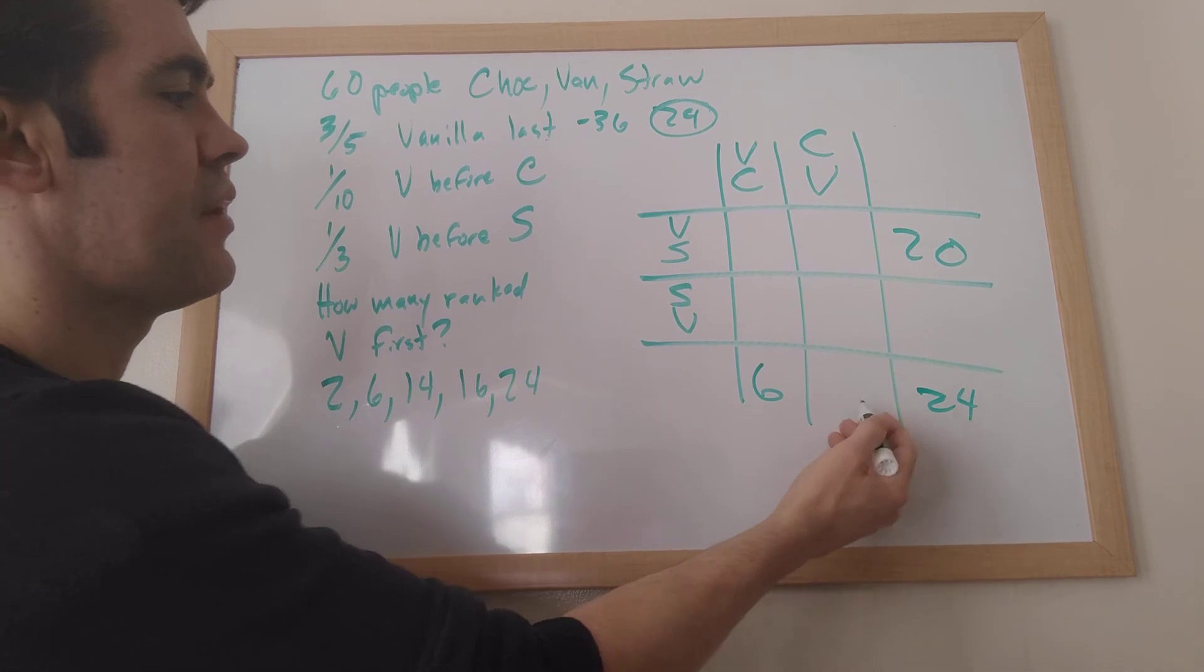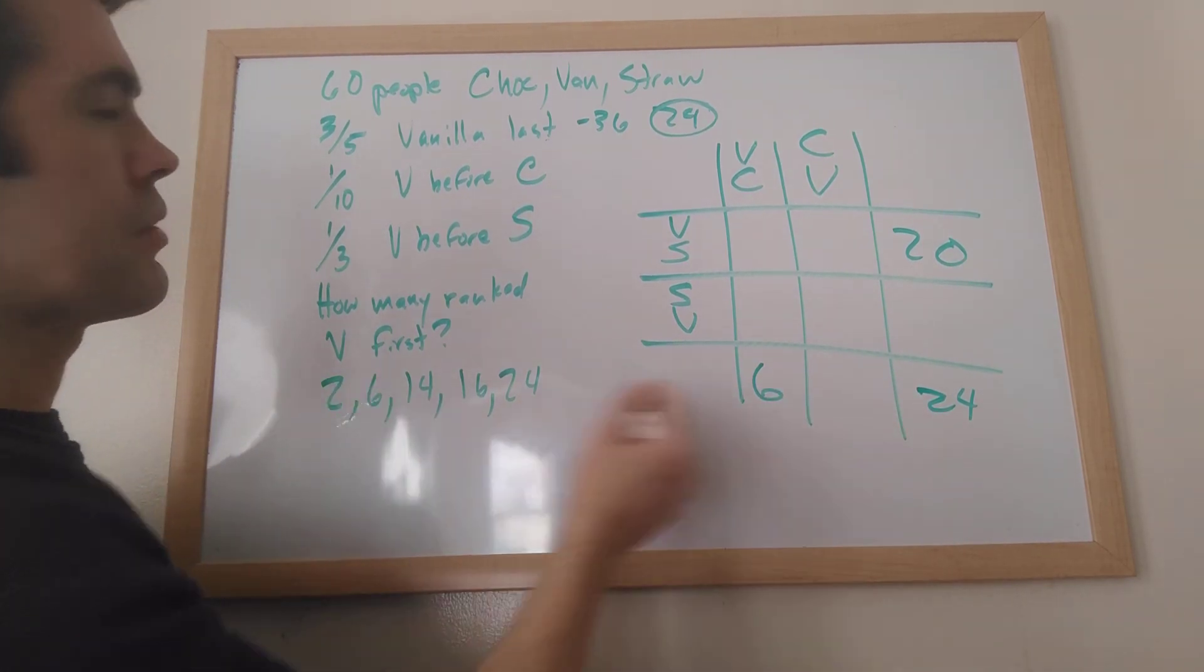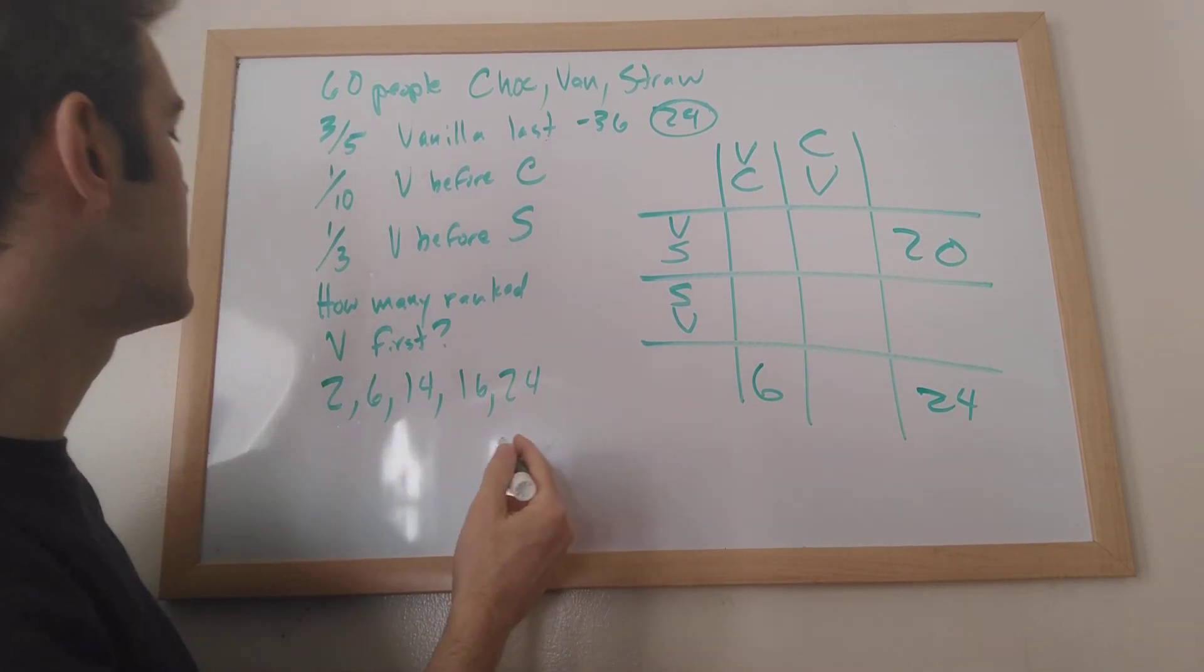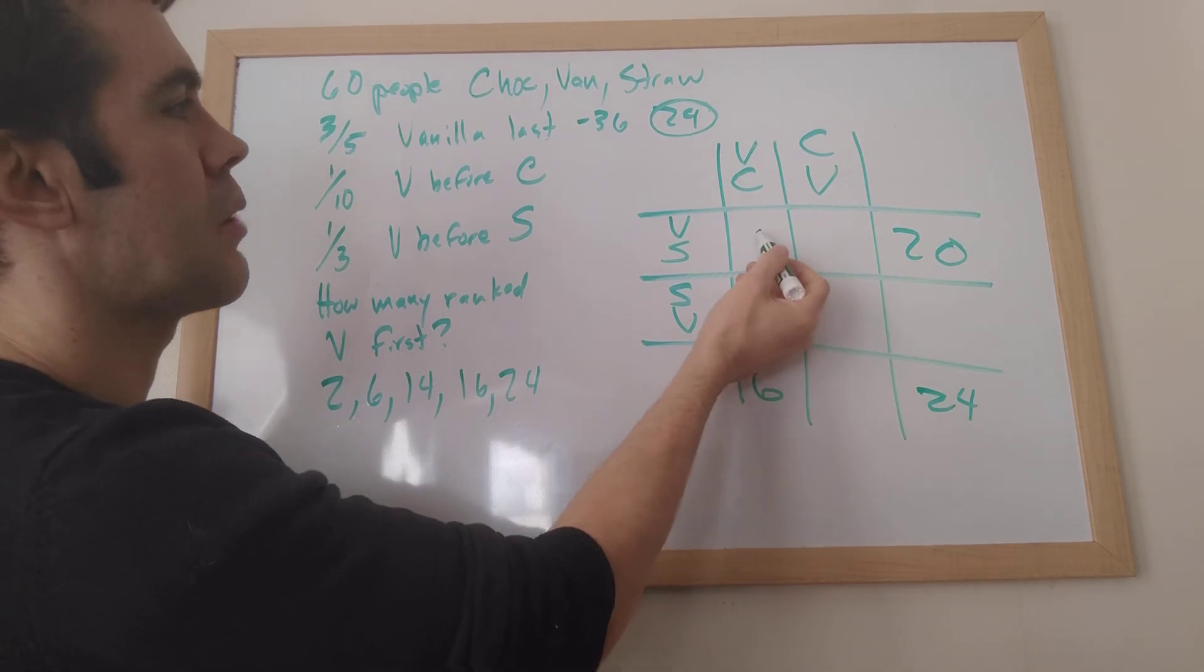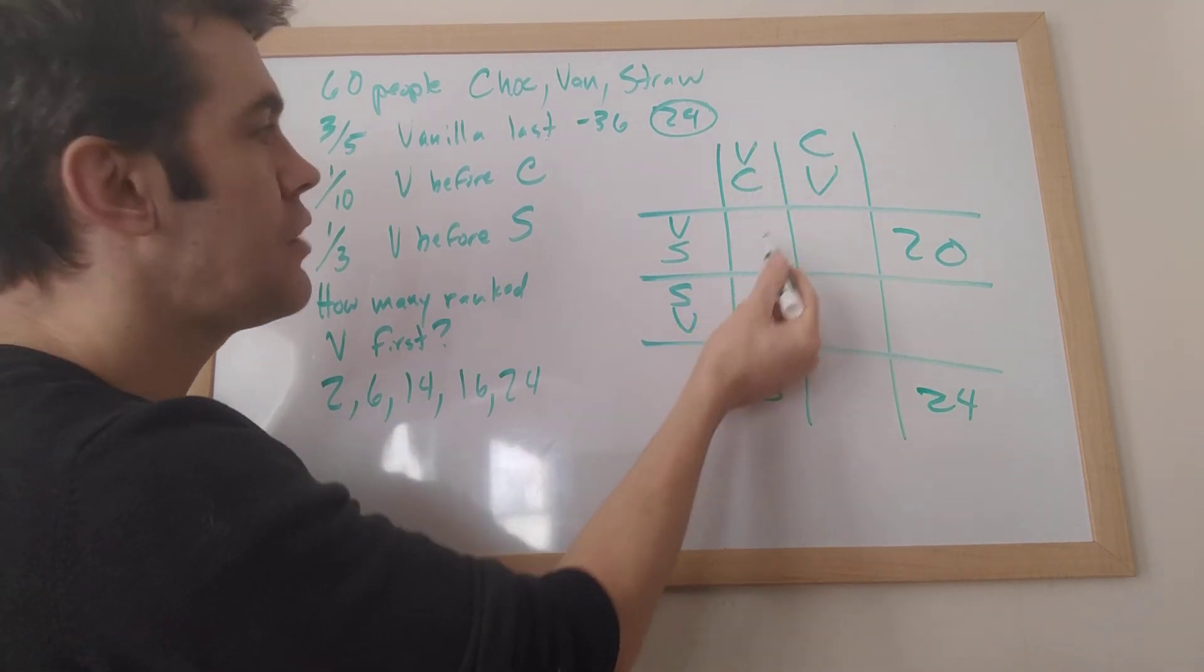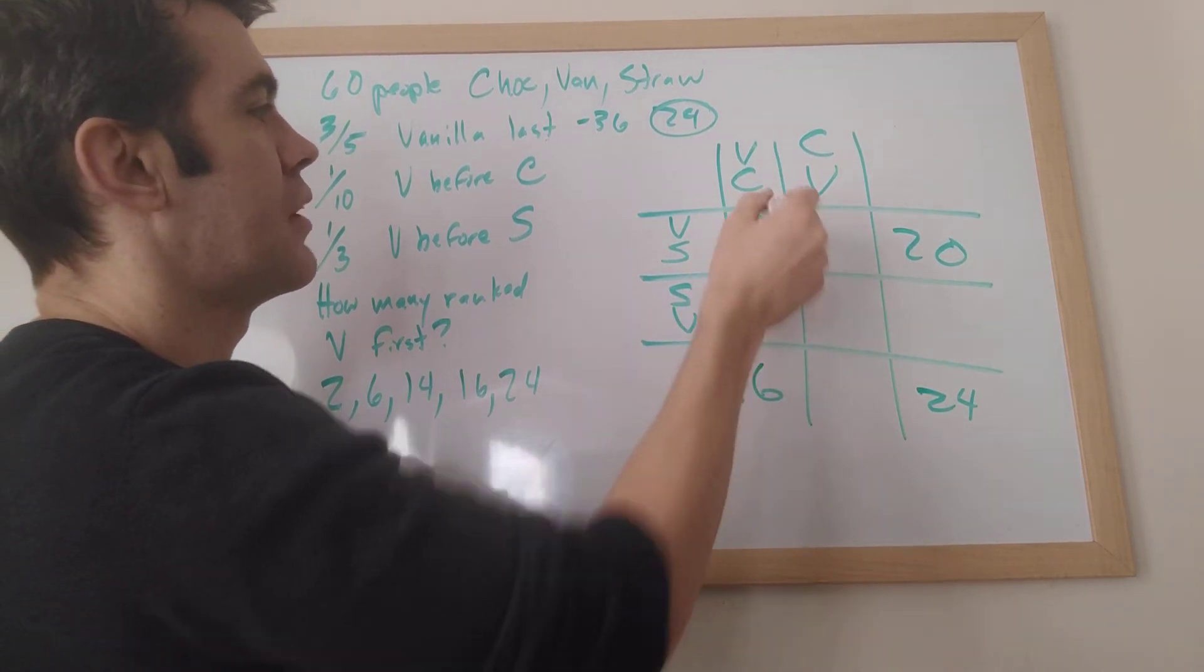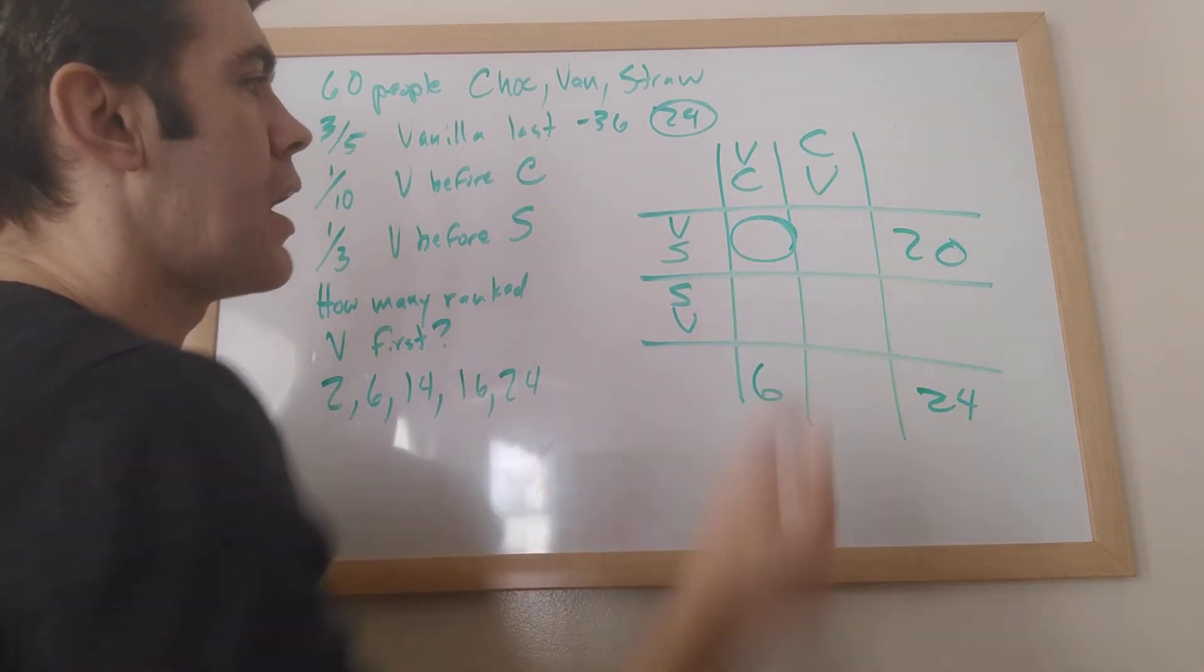All right, now I can fill in this. And also, I like to put a circle around what the question is. So the question is, how many rank vanilla first? That's this, right? If you rank vanilla before chocolate and you rank it before strawberry, then it must be first. All right, so I want this box.